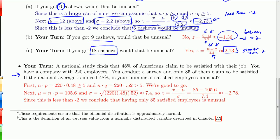Here are more applications of this situation. A national study finds that 48% of Americans claim to be satisfied with their job. So 48%, that's the national average of Americans who are satisfied with their job. Now you have a company with 220 employees. And when you do a survey, only 85 of them claim to be satisfied. And so that's well below 48%, because 48% is about 50. So you'd expect about 110 to be satisfied, and you only got 85. So we're asking ourselves in this question, is your number of satisfied employees unusual? You'd expect about 110, you're getting 85. Is that unusual?